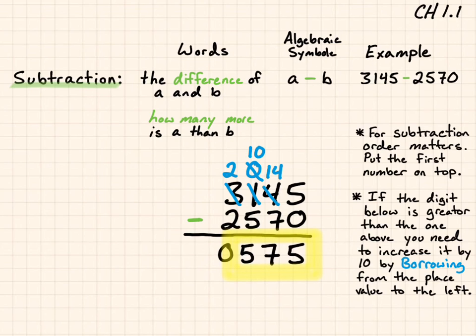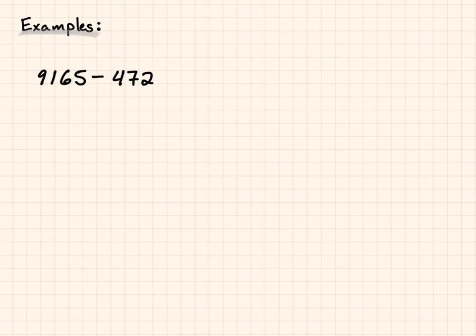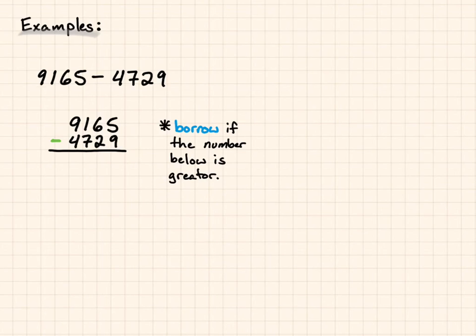Let's go over some examples. So here's two examples that we're going to go over. Our first one, 9,165 minus 4,729. The first number goes on top. And now I'm subtracting. I can't subtract 9 from 5. The larger number is on the bottom, so I'm going to have to borrow from the place value over. Borrow if the number below is greater. 6 becomes a 5. And this, which was 5, becomes 15. Now I'm subtracting. 15 minus 9 gives me 6. 5 minus 2 gives me 3.